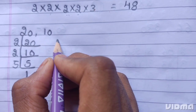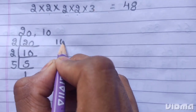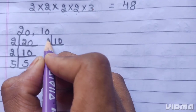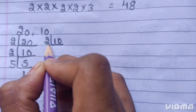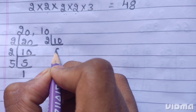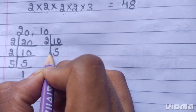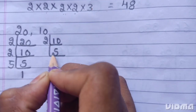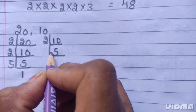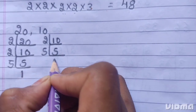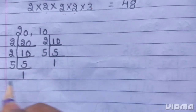Next, 10. 10 is divisible by 2. 2 times 5 are 10. 5 is a prime number. It divides itself. 5 times 1 is 5.